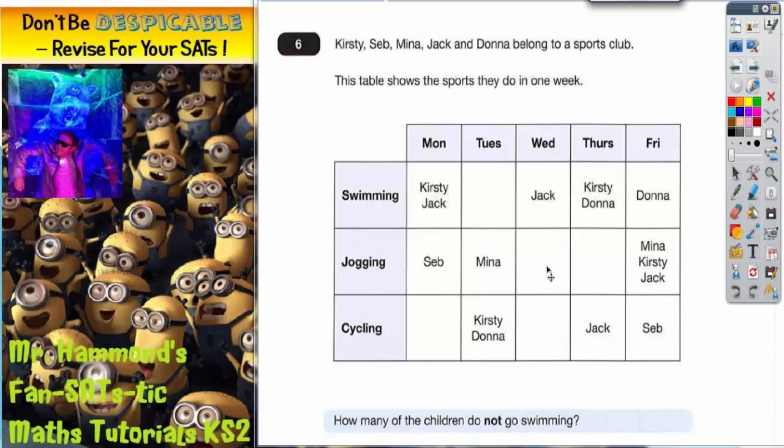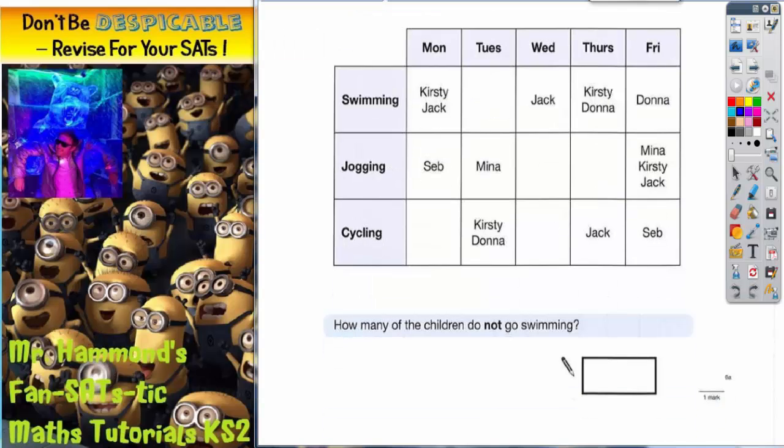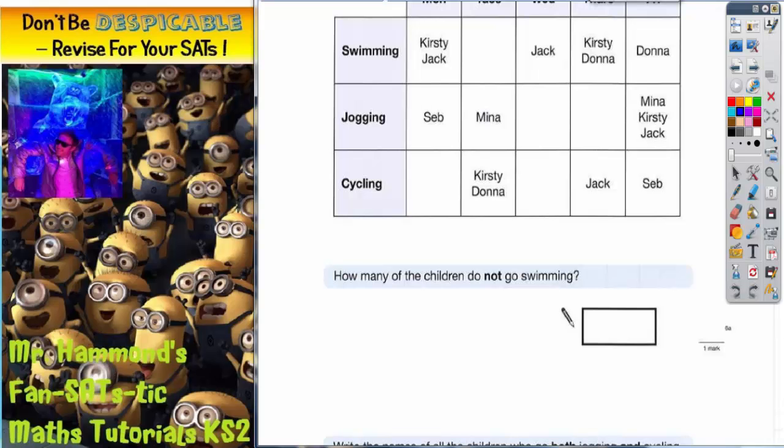If it's an empty square, it means nobody does that activity on that day because there are no names in it. So let's have a look what we've actually got to do. First part of the question says, how many of the children do not go swimming?